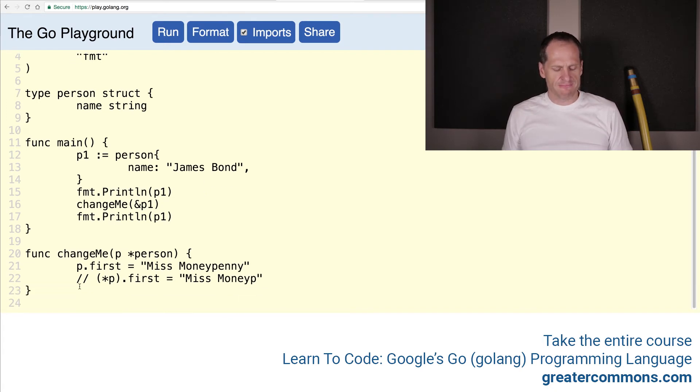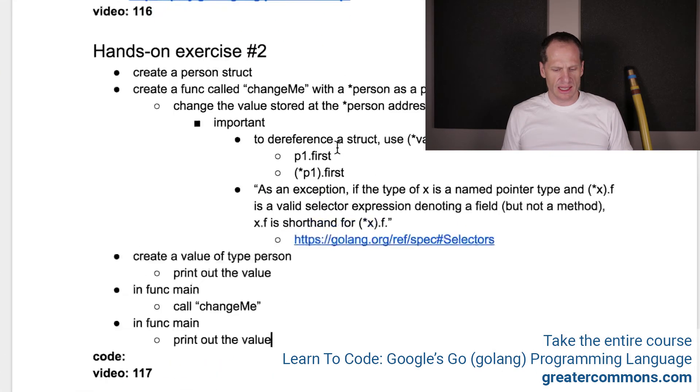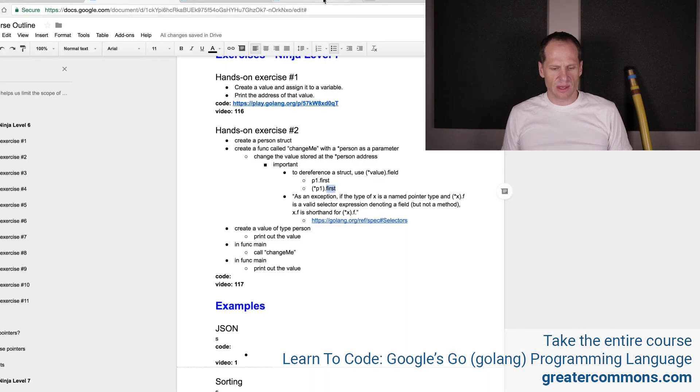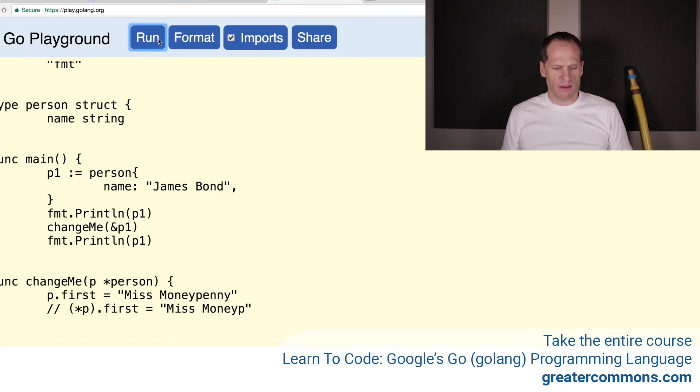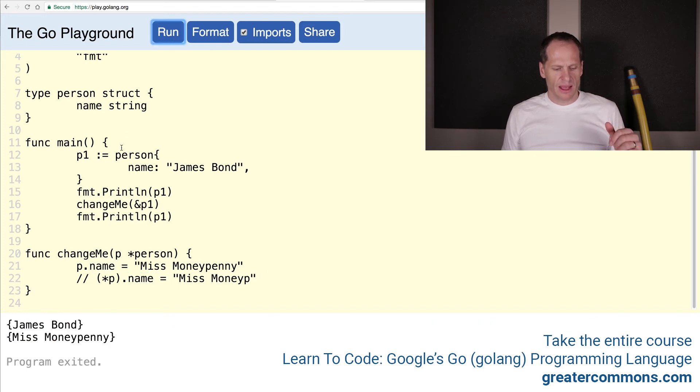Let's just make sure I have that right in the notes, I have those in the correct place. I do, I was just checking to make sure it's dereference the value at this address, give me the value at this address. So dereferencing that address, give me the value at that address, that's the right way, and then dot that field. Okay, let's run it and see what happens. Format run p first, undefined type pointer to person has no field or method first. That's because I changed it to name. You probably saw that and you're like, name, it needs to be name.